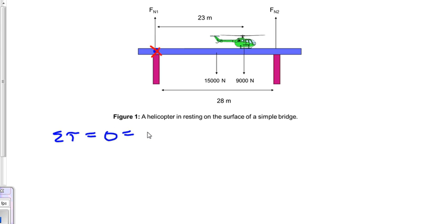Let's do the 15,000 newtons first. So that would be minus 15,000 since that is causing clockwise torque. That's occurring at the center, so I'll divide this 28 by 2. Multiply that down by 14.